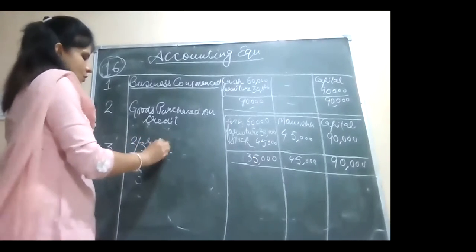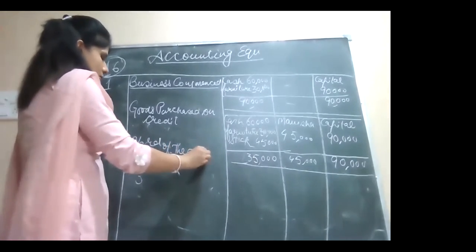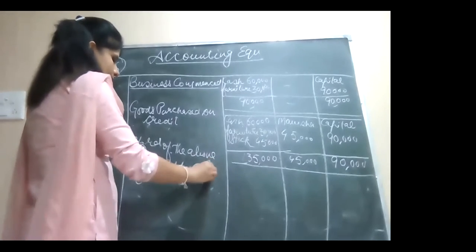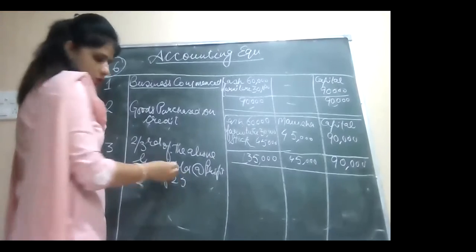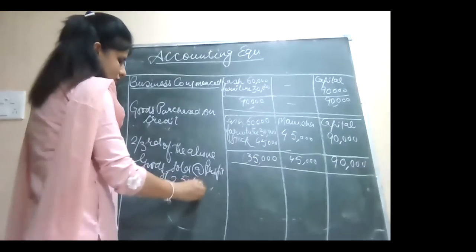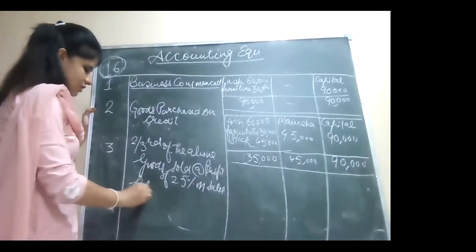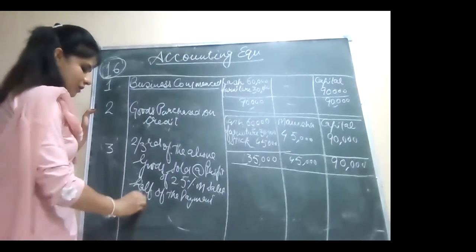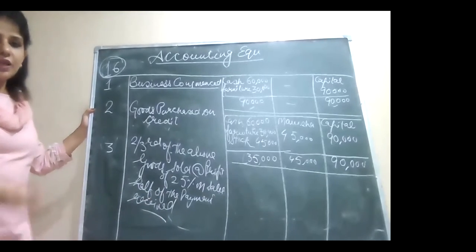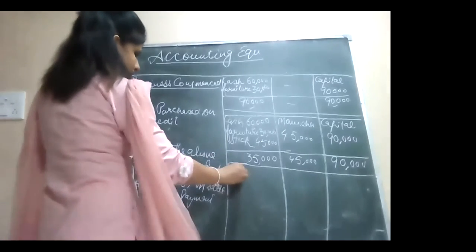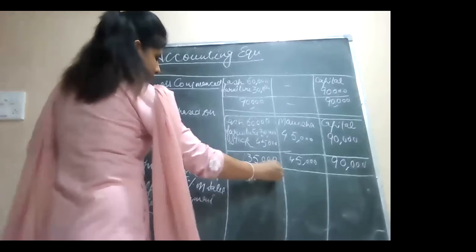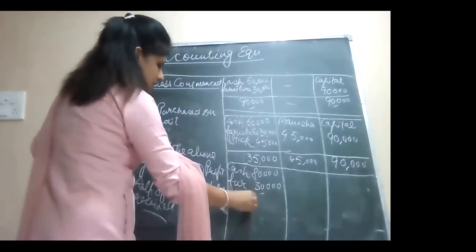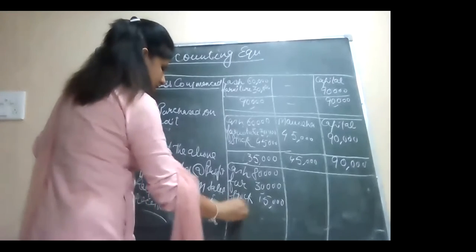Two-thirds of the above goods sold at a profit of 25%, 25% on sales. Half of the payment received immediately. If you are talking about half of the payment received, the rest of the half will not get. What will not get, the debtors are making. What will get, the cash will be 20,000. The cash will be 80,000. Furniture is same as of earlier, 30,000. Stock means 30,000 minus 15,000. Debtors will be 20,000.